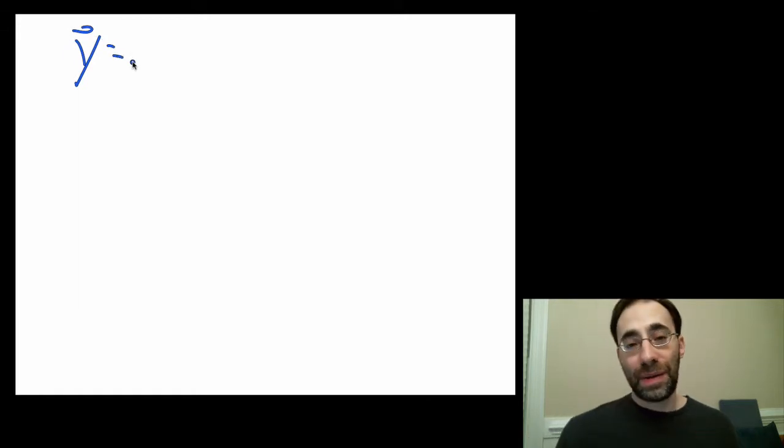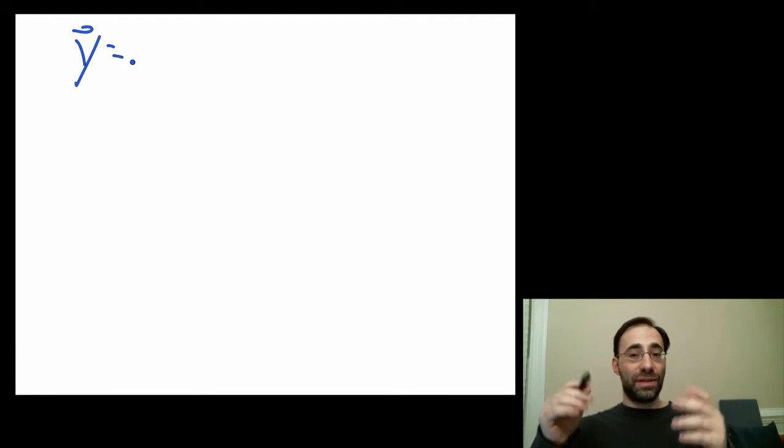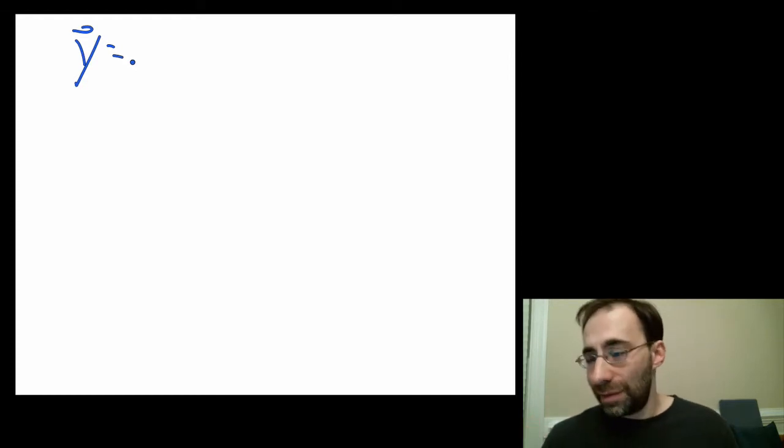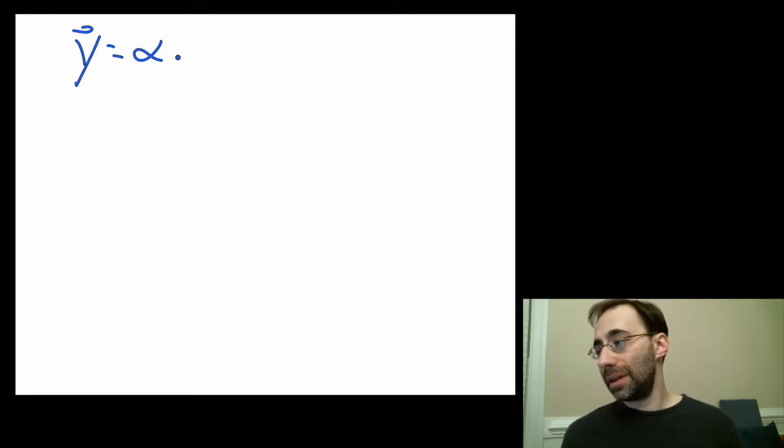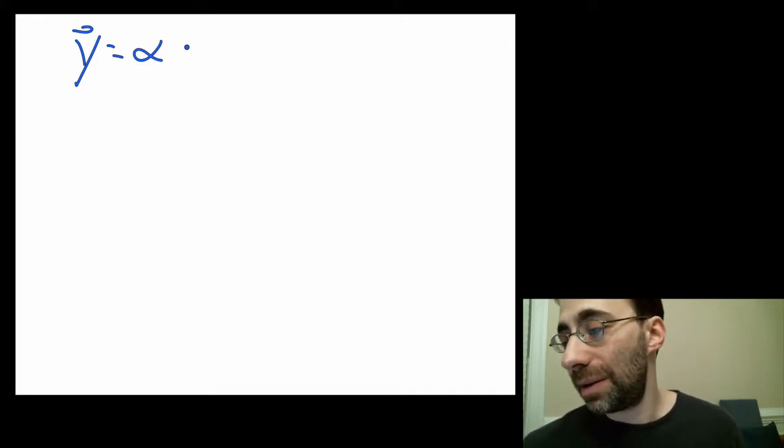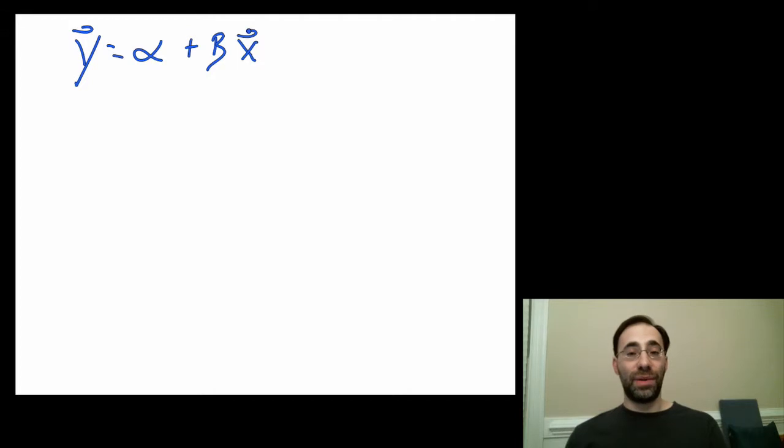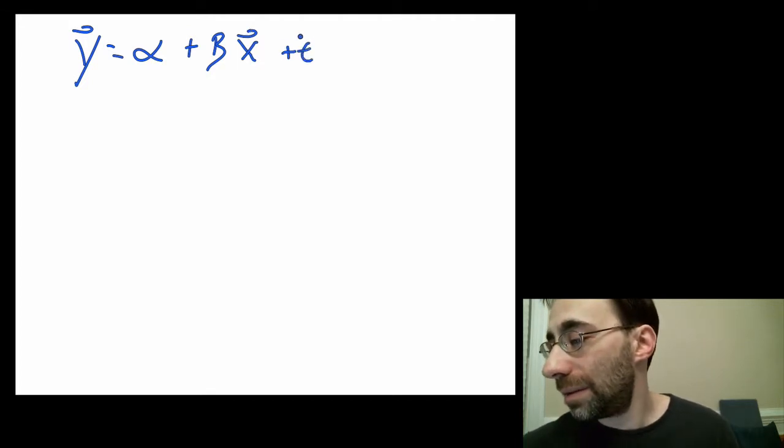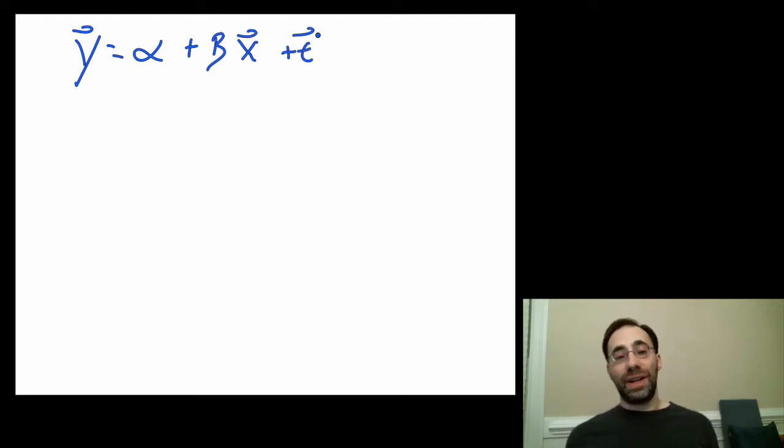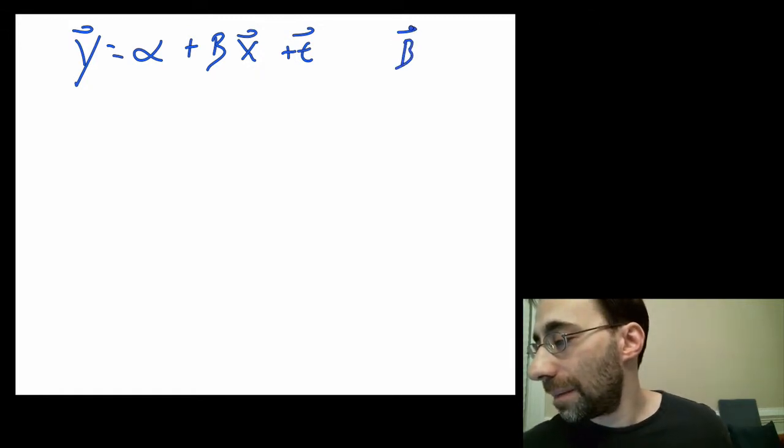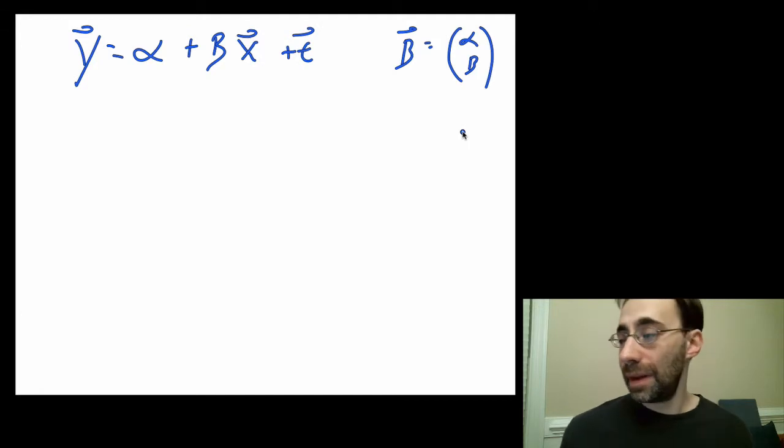A simple linear model might have a single dependent variable y in a vector because all the data points for that dependent variable are placed in a vector, plus some intercept alpha when x equals zero, plus a coefficient beta times a vector x, which is going to correspond to a vector of the data points for a single independent variable. This is a linear model because it says that x affects y linearly. We can write this a little differently by making a vector beta out of alpha and beta together.